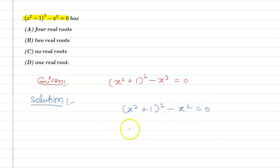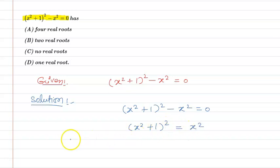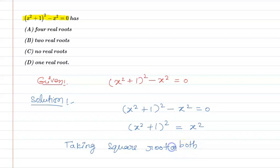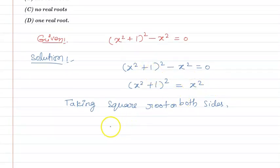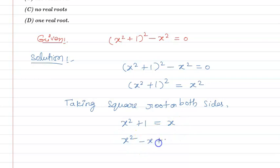If I take -x² to the right-hand side, then (x² + 1)² = x². Now taking square root on both sides, the squares cancel out, so we get x² + 1 = x. Bringing x to the left side, we get x² - x + 1 = 0.